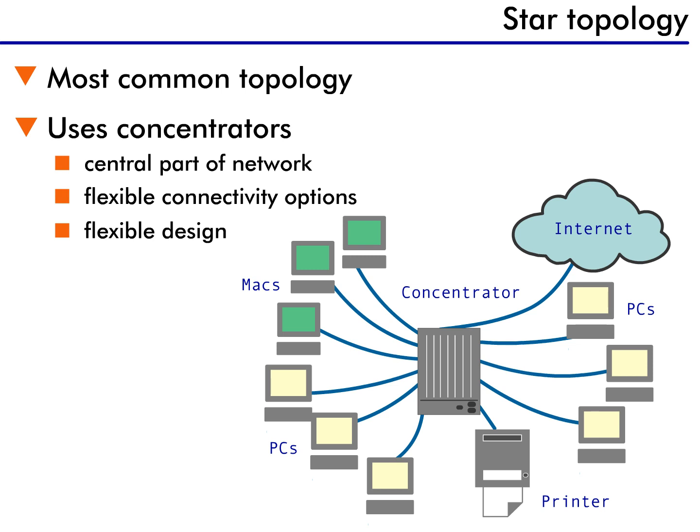A star topology does not have a single point of failure. Each station has independent access to the concentrator, and a cable failure will only affect one station.